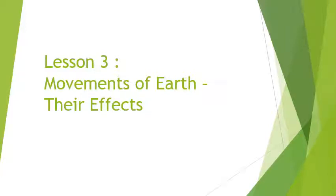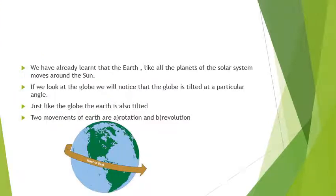Good morning dear students. Today we'll be starting with the third chapter of SS, that is the Movements of the Earth and its Effects. We have already learned that the earth, like all the planets of the solar system, moves around the Sun. Can you see a globe in this picture? Observe it carefully — you will find the earth is slightly tilted. The same way, a globe is also slightly tilted. The line seen in between is called the axis of the earth.